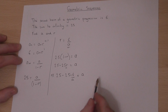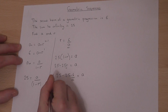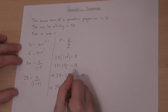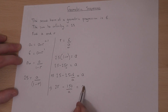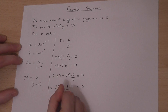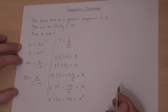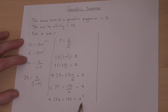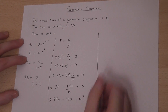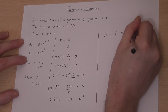I can work out that 25 times 6 is 150, so 25 minus 150 over a equals a. Multiplying through by a gives 25a minus 150 equals a squared. This can then be rearranged to get a squared minus 25a plus 150 equals 0.